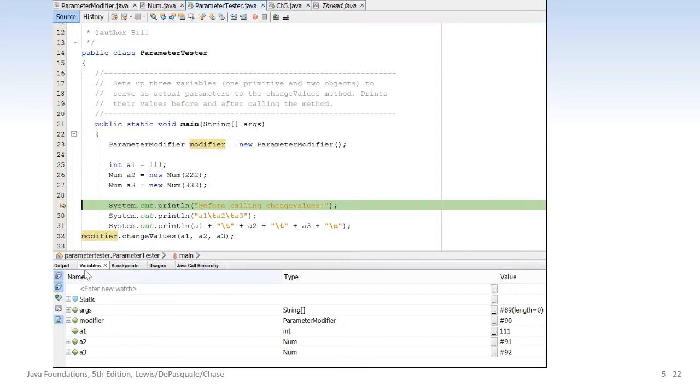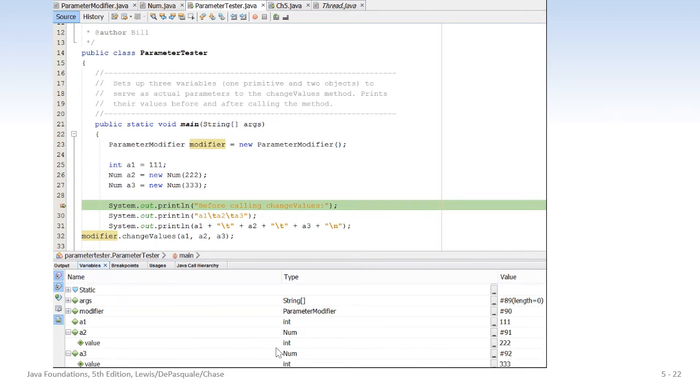So I'm going to come over here and we're going to go to debug. So we'll stop at the breakpoints. And you'll see I have a breakpoint here before my first output. But I could take a look at my variables. So I've got A1, an integer, holds 111. A2 is a num object. And if I expand it, you'll see the data associated with that object is one integer and it's stored, I'm storing the value 222. And of course, A3 is another num object. I expand it. Its value, its integer value is 333.